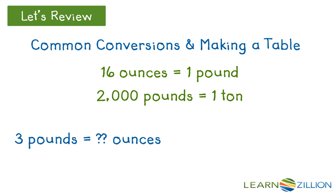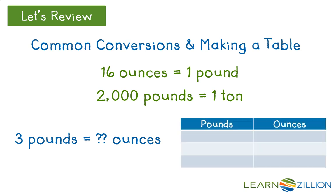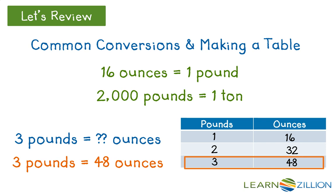Now, if we wanted to convert and see how many ounces were equal to 3 pounds, we could use our making a table strategy. We would start it off by saying 1 pound is equal to 16 ounces, 2 pounds is equal to 32, and we would continue adding 16 down our table until we got to where we wanted to, which is 3 pounds here, and we can see that 3 pounds is equal to 48 ounces.